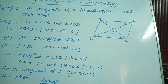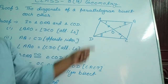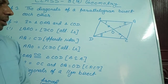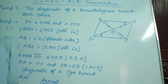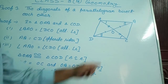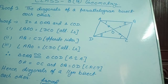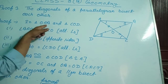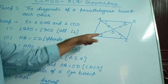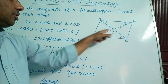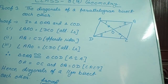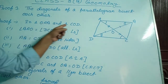Proof 3: the diagonals of a parallelogram bisect each other. ABCD is a parallelogram in which AC and BD are the two diagonals. We are asked to prove that diagonals bisect each other, meaning OA equal to OC and OB equal to OD. For that I look at triangles OAB and COD. Our aim is to prove these two triangles are congruent.